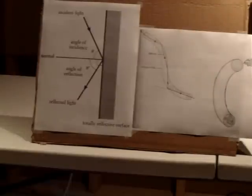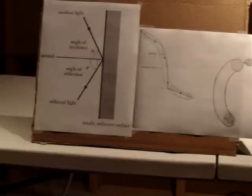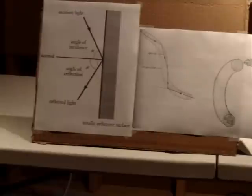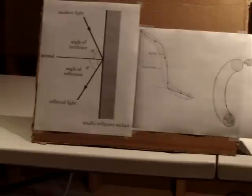Up till now, we know what fiber optics are, we know the different types of fibers, we even know how they work, but there are still many unanswered questions. Such as: light enters one end and comes out the other, but what actually happens within the wire? How come the light stays within the medium? How come no energy is lost? And what are the two diagrams in front of me about? Here's where physics comes into play.